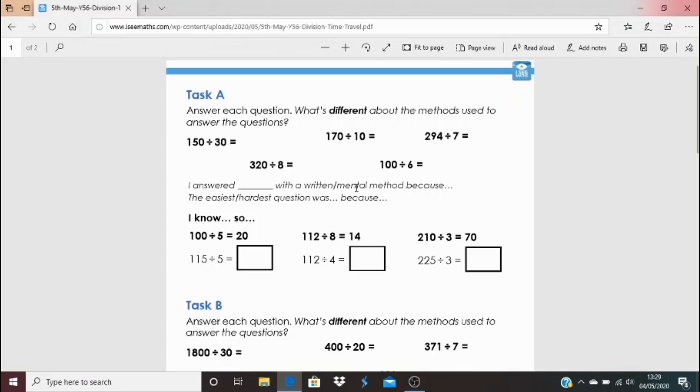So for task A and B, the key thing is about thinking about the different methods that are used to answer each question. So have a go at actually answering the questions, and then think how are the thought processes different? So I've written here some sentence stems. You might be able to say something like, well I answered 320 divided by 8 with a mental or written method because... and you could talk about those differences in the strategies. So before you calculate, think well what will work for this question in particular?